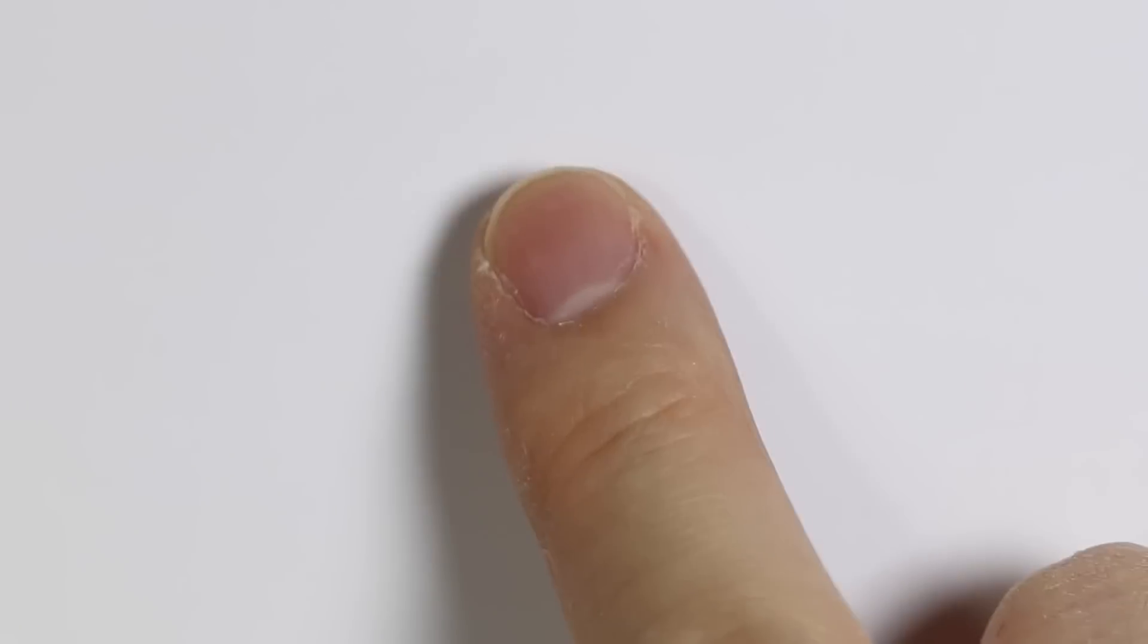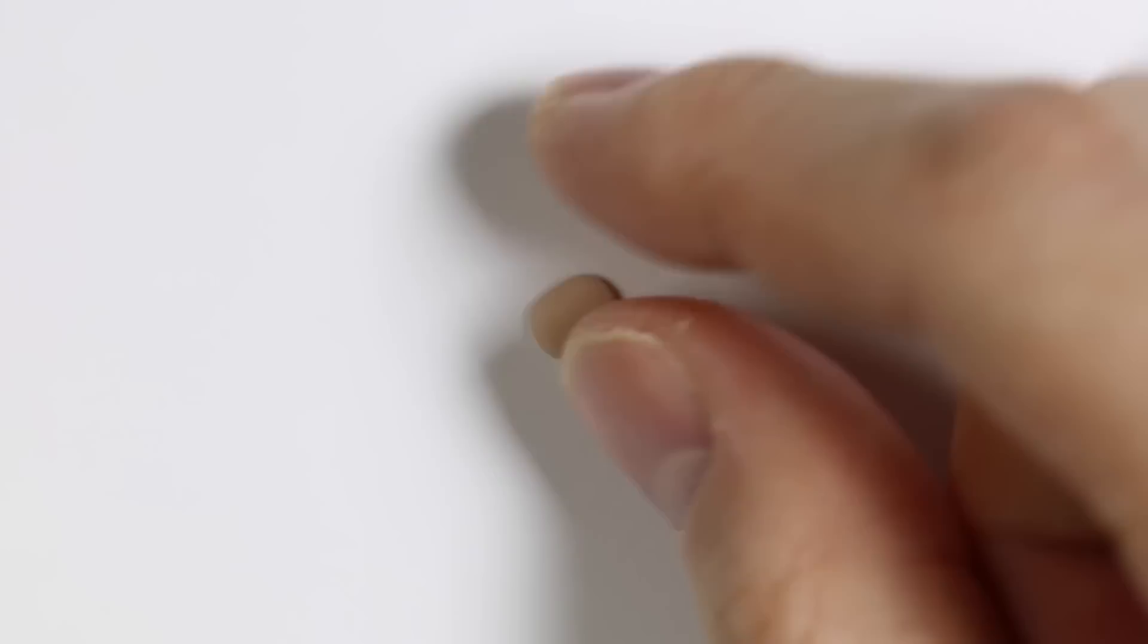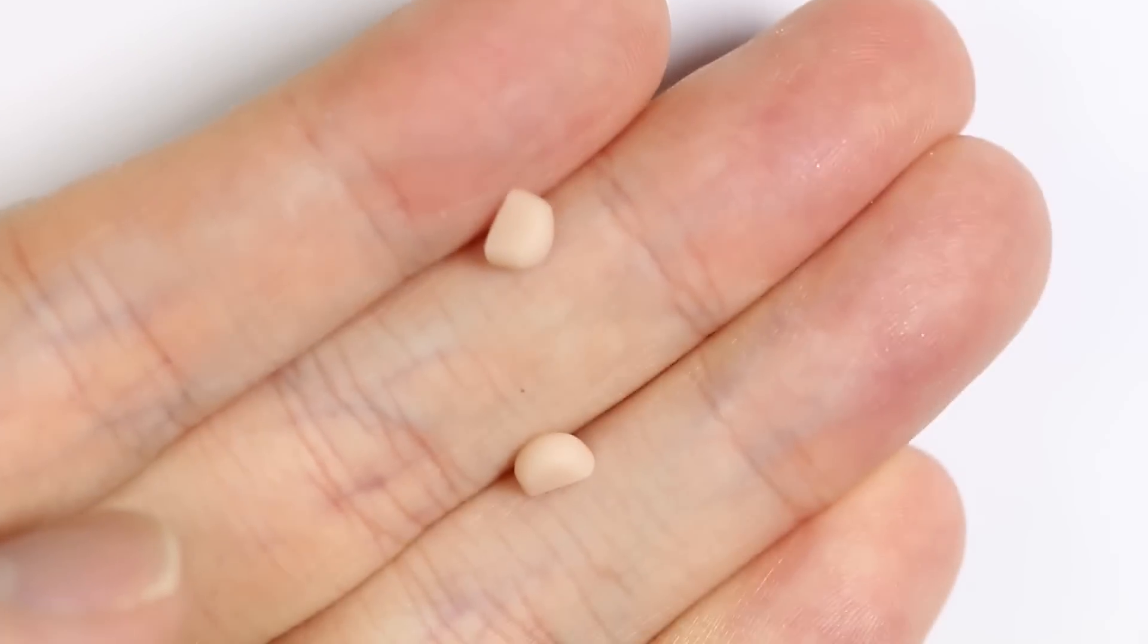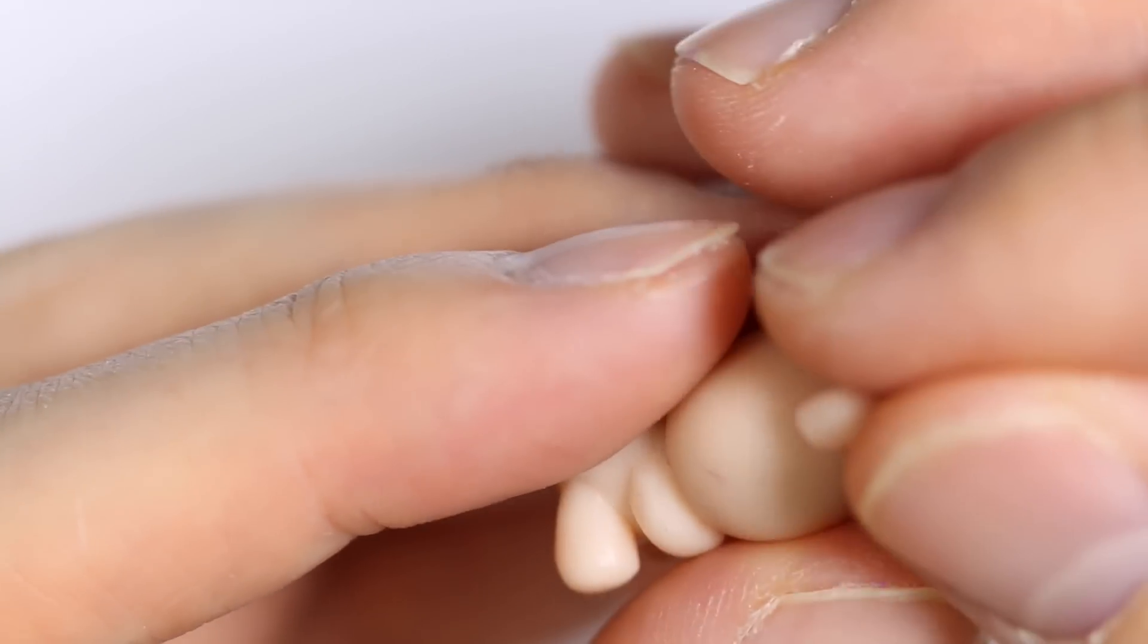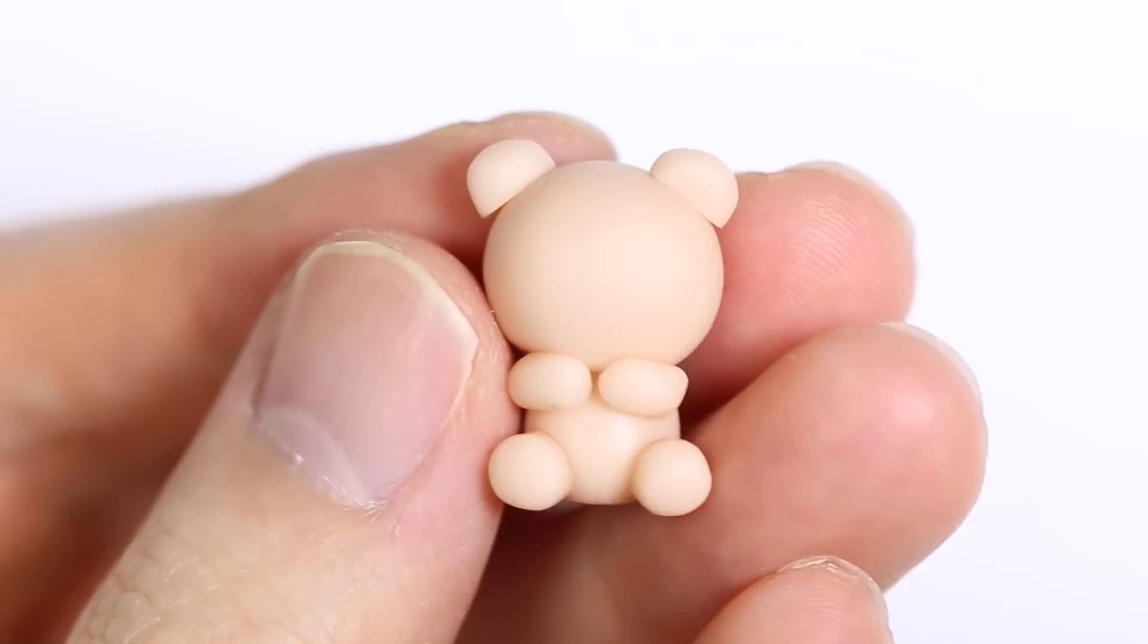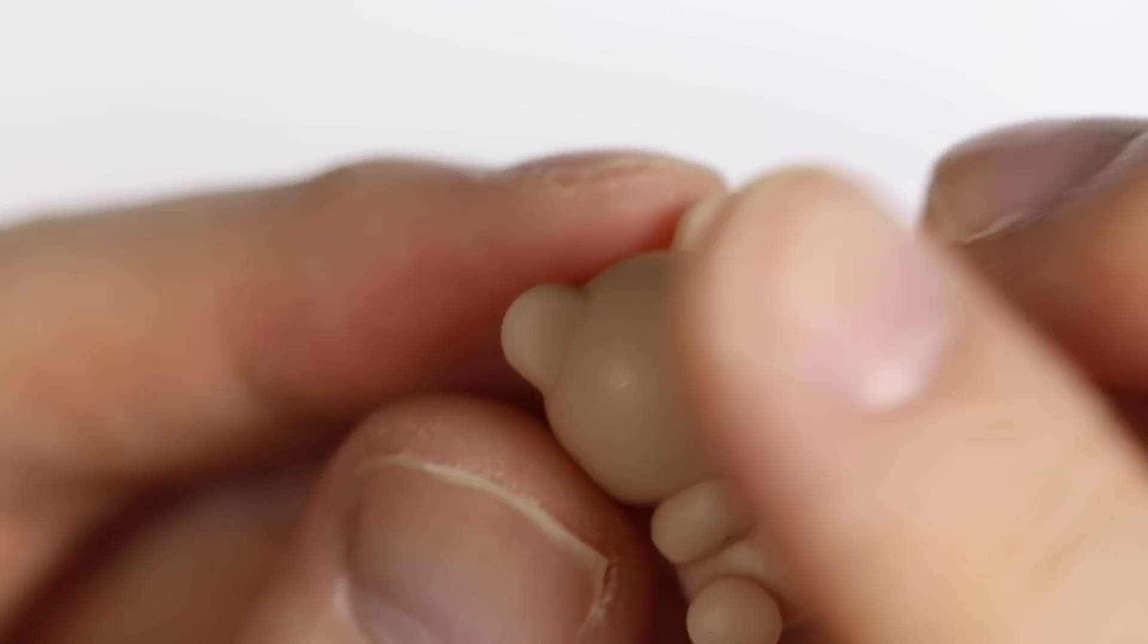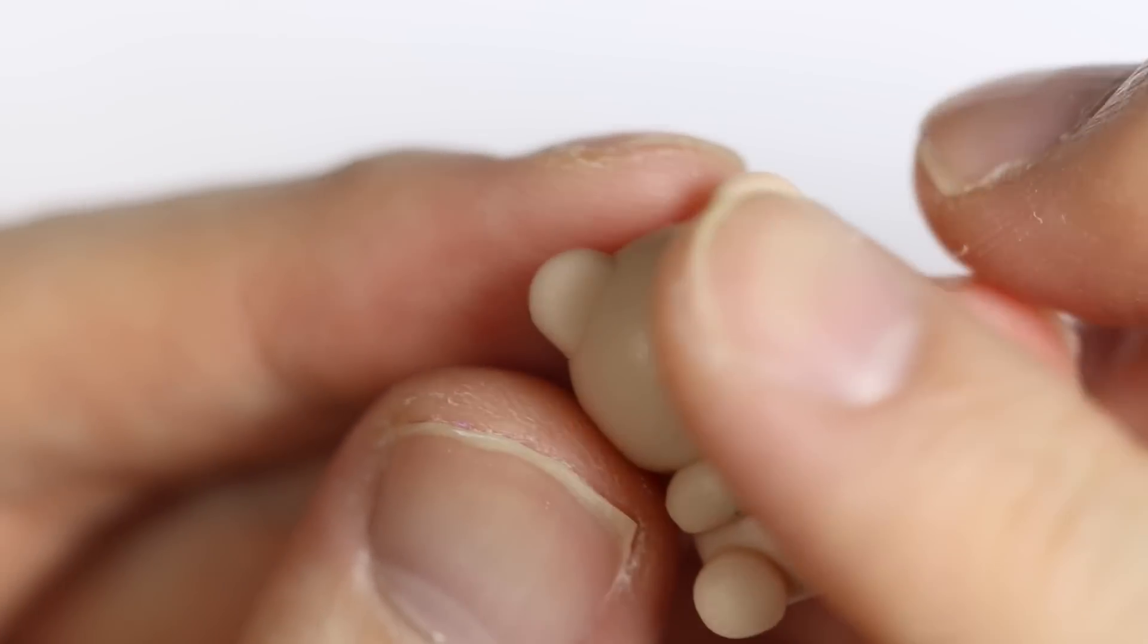For the ears, I'm going to flatten some clay into an oval shape and cut it in half and blend that onto the top of the head. And I'm taking another oval shape and I'm putting that towards the middle of the face for the nose.